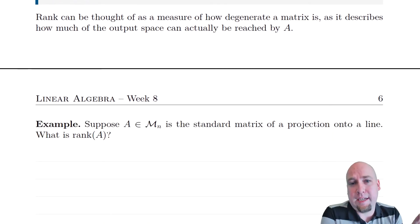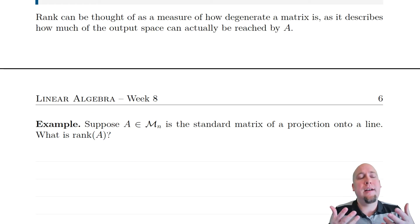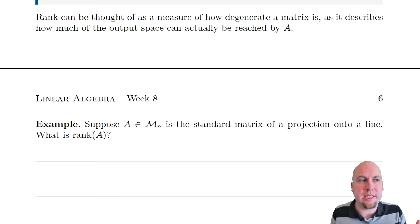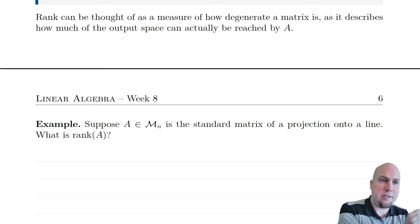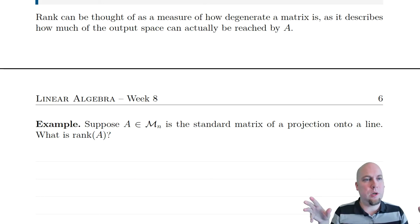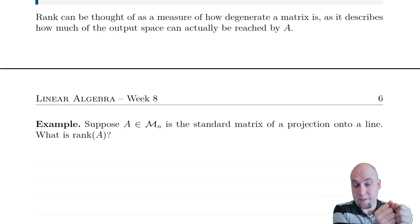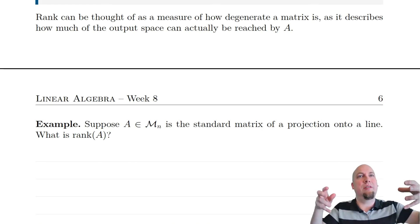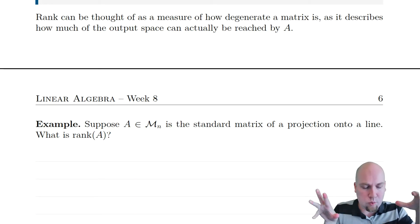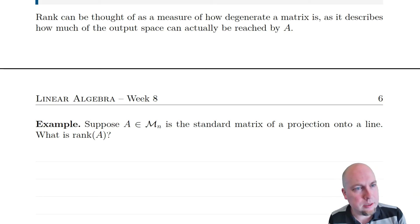The point of the rank of a matrix is that it's a measure of how much information is in that matrix — in other words, a measure of how non-degenerate that matrix is. For example, the zero matrix sends everything down to the zero vector; it squashes everything into the zero subspace. Its range is the zero subspace, so its rank is zero. The zero matrix is the most degenerate matrix there is — its rank is as small as possible.